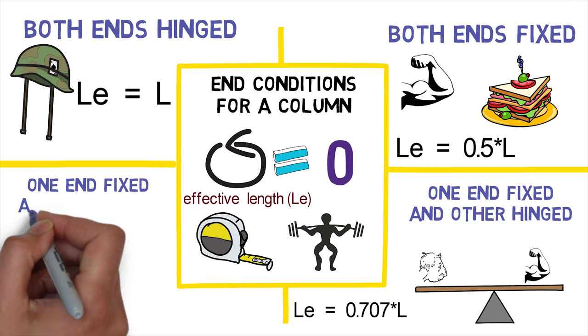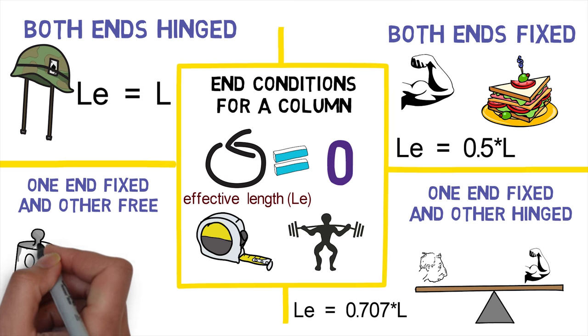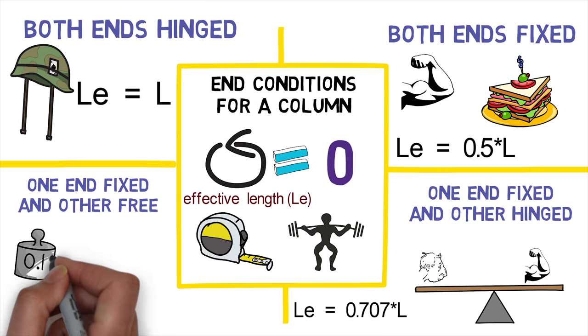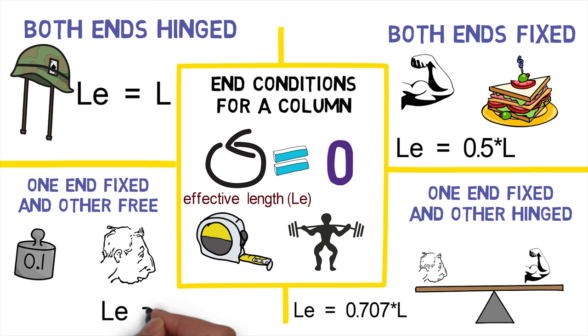Fourth and the last condition, one end fixed and the other end free. This end condition makes the column bear the smallest load than all other end conditions. Column in such condition is very weak. Equivalent length for this condition is 2L.